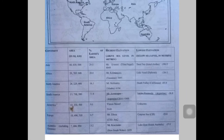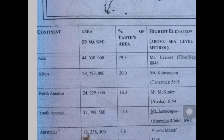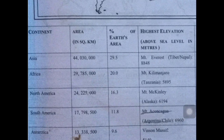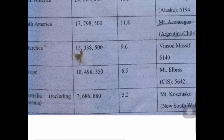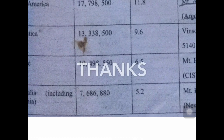So these are the seven continents of the world according to their size, and also their highest elevation point and their lowest elevation point. Asia is number one in area, while Australia is the smallest.